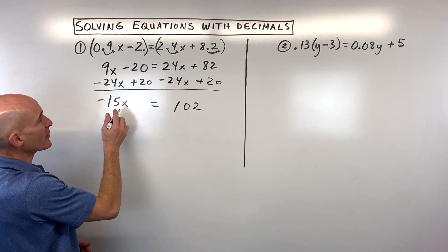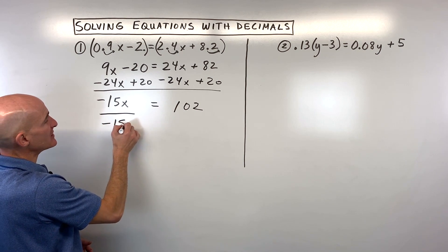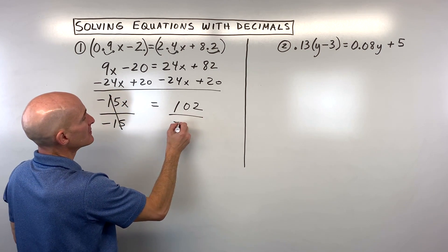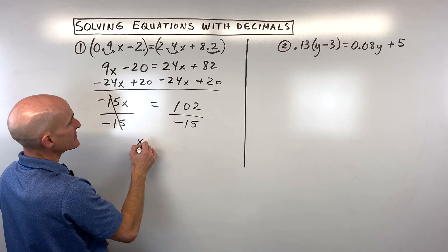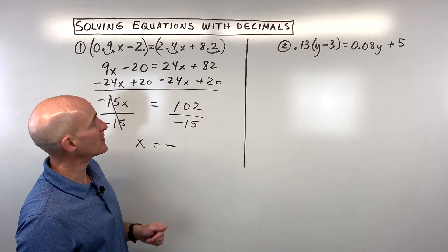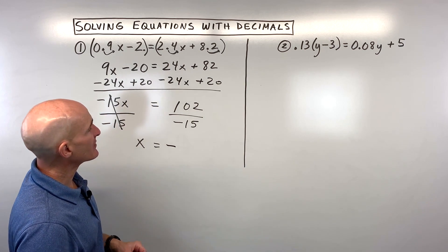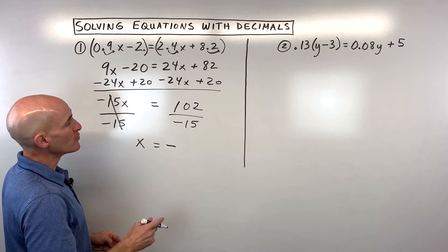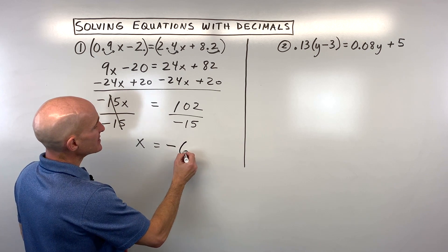Okay, now we just want to solve for one of our variable by dividing by negative 15. And let's see, so x equals a negative. How many times does 15 go into 102? Well let's see, 7 times 15 is 105—that's a little too much. So this is going to be 6 times.